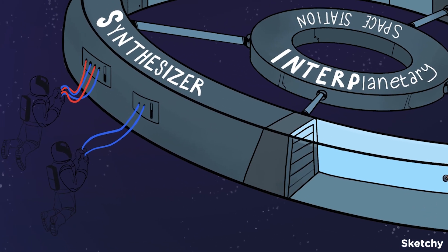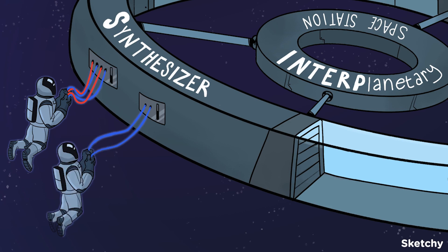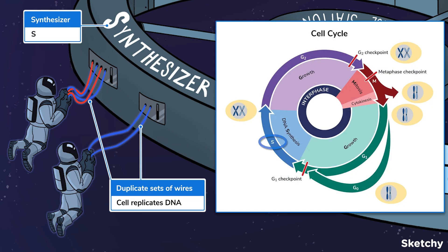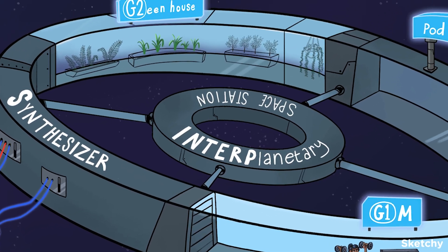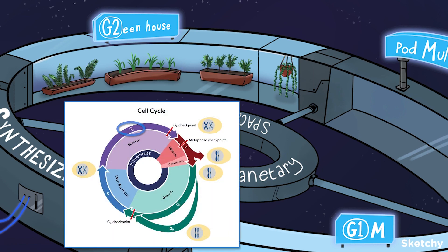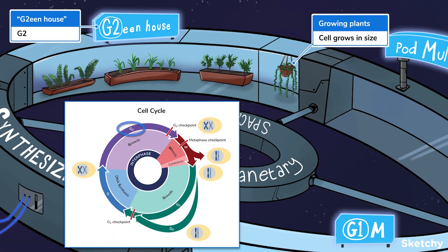On to the synthesizer room — this is where new information gets synthesized. These duplicate sets of wires remind you that a cell doubles its chromosomes during the S phase. The final part of interphase is G2, also called the second gap or growth stage. In G2, a cell continues to grow in size while preparing for mitosis and cell division.